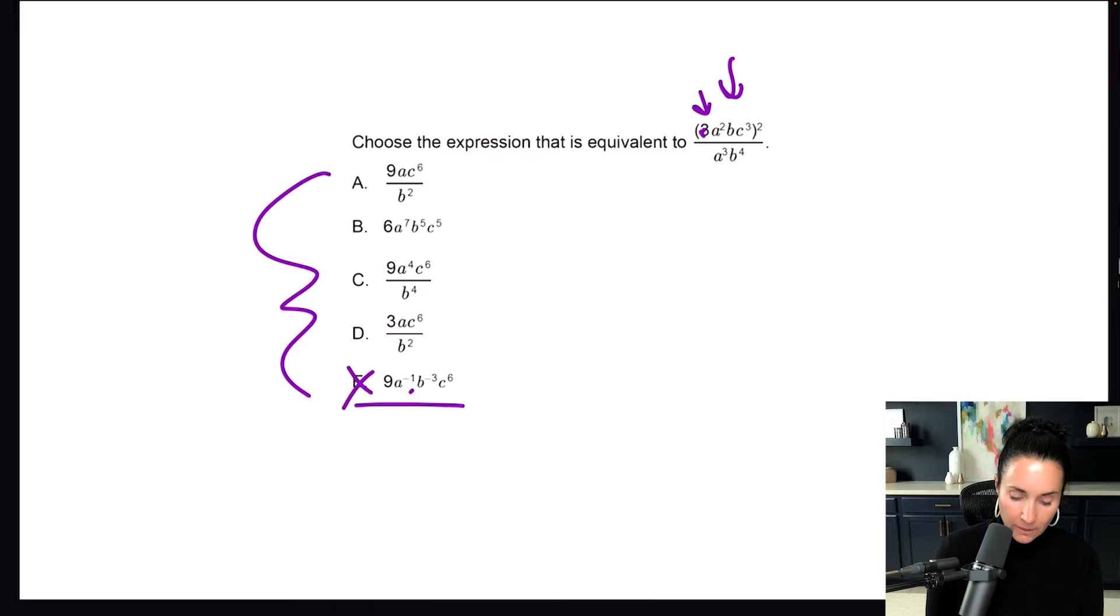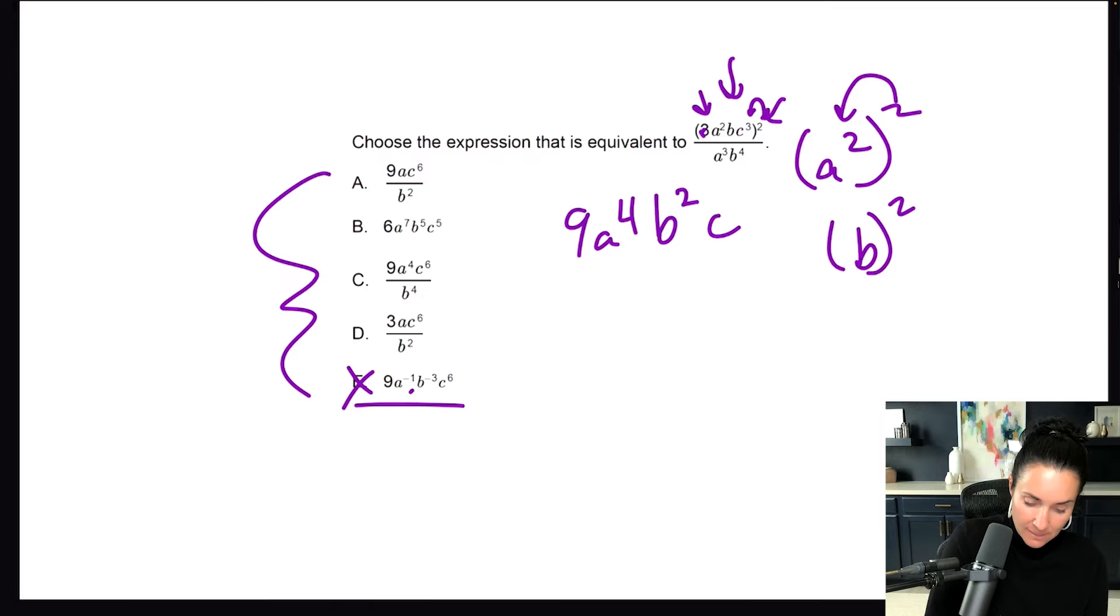So let's have a look at the actual question here. So we have three a squared BC to the third to the second power. Well, what is three to the second power? That's going to be nine because three times three is nine. Well, what is a squared to the second power? When you have this situation, you multiply these two together and this becomes a to the fourth. Well, what's B to the second power? Well, that's basically B to the one times two. So that would be B squared. And then we have C to the third to the second power. So remember, we're going to multiply those and this would be C to the sixth.